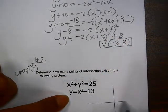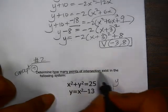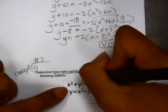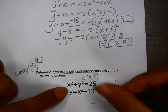If we graph these, we can quickly tell where they intersect or how many points of intersection there are. This circle has a center at 0, 0, and a radius of 5. Square root of 25 is 5.